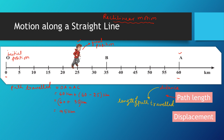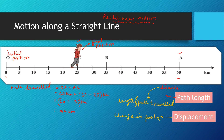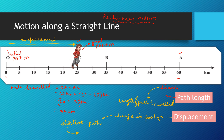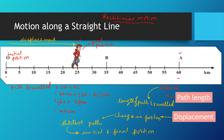The next concept is displacement. Displacement talks about the change in position. To know the change in position you should know the initial and final position. To find the displacement, we are going to draw a straight line from the initial position to the final position. The length of this shortest path is called displacement. So the straight line is going to be the shortest path between the initial and final position.